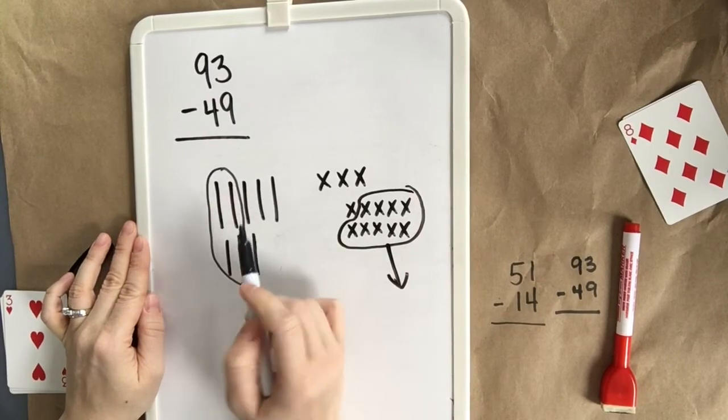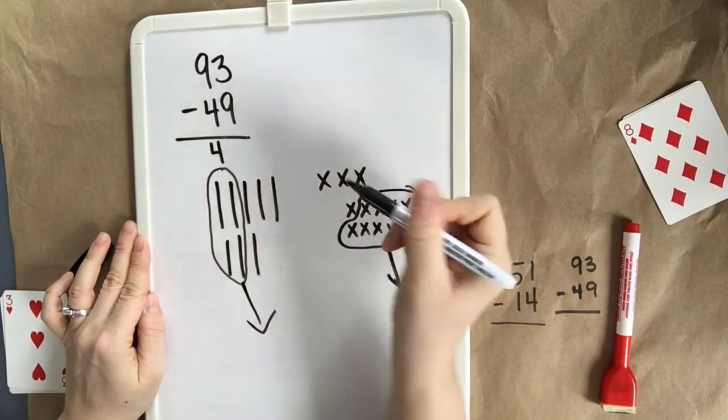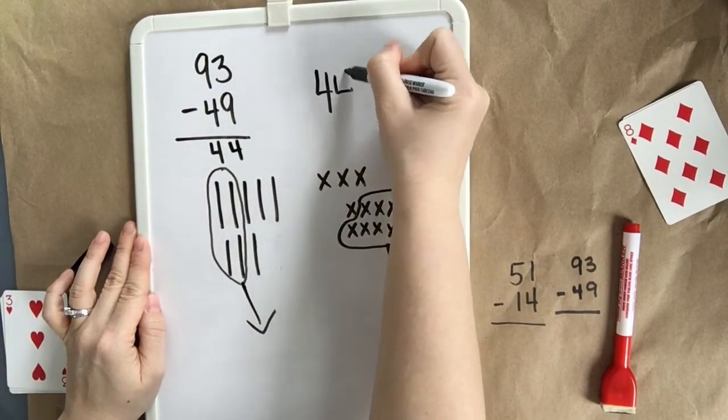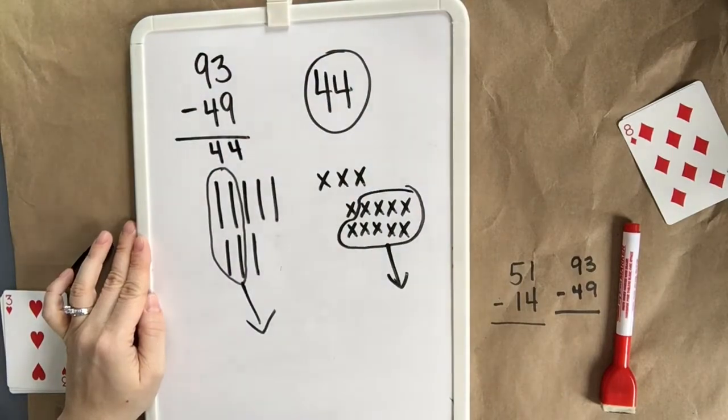Now what's left? 10, 20, 30, 40 in our 10s and 4 in our 1s. Good. The same number that we had on our open number line.